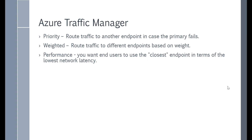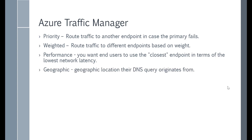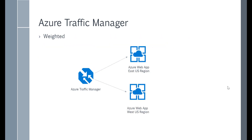Another is the Performance routing method. If you want users to be directed to an endpoint which is closest to them in terms of network latency, then you can choose the Performance routing method. Else, if you want to base it on a geographic location, then you can use the Geographic routing method. For example, with the Weighted routing method and two web applications in different regions, you can divert 50% of the traffic to one web app and 50% to another — it's almost like load balancing your traffic across different web applications.